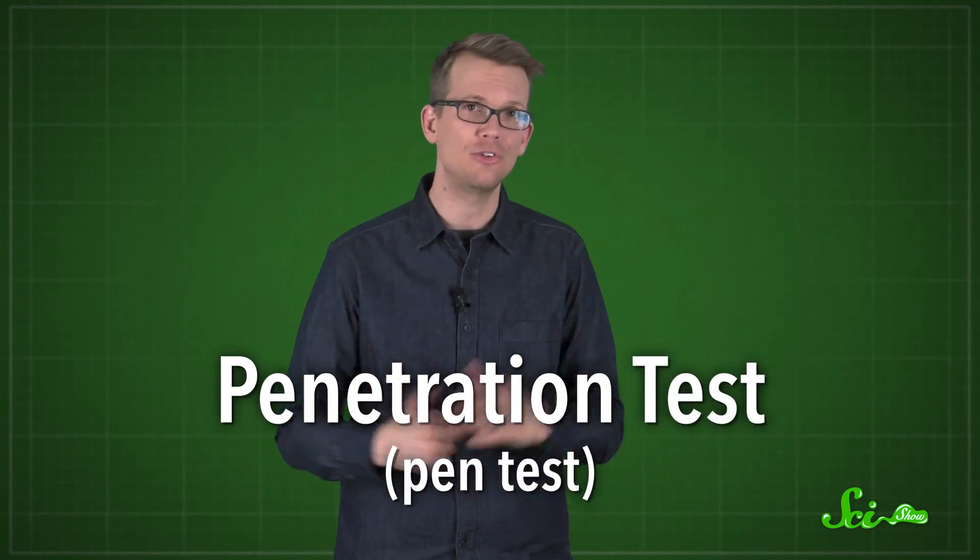One of the main things white hats do is called a penetration test, or pen test for short. You test a system for vulnerabilities, and then fix any that you find, instead of causing damage like a black hat would. This is a pretty standard procedure, so looking at the steps is a great way to explore some of the basic principles of hacking.